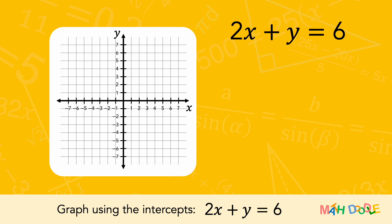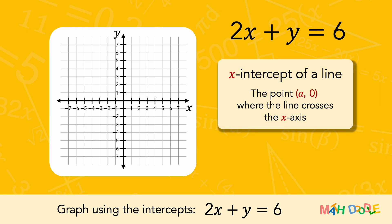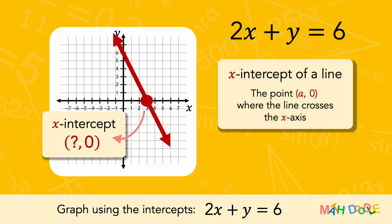To graph the equation of 2x plus y equals 6, we are going to use the x and y-intercepts of the line. The x-intercept of a line is the point where the line crosses the x-axis, and it has a y-coordinate of 0.